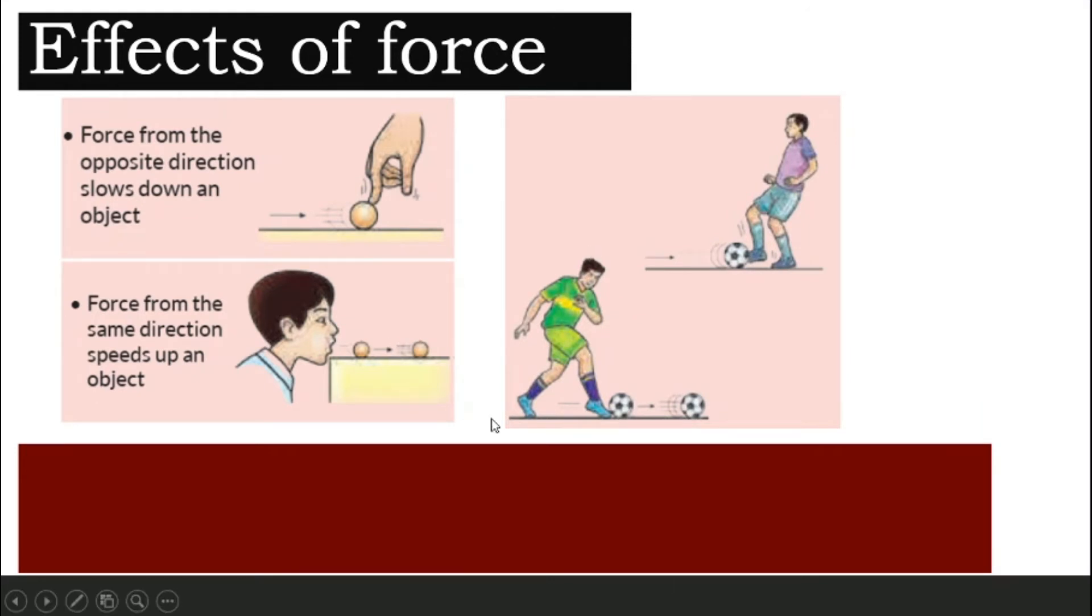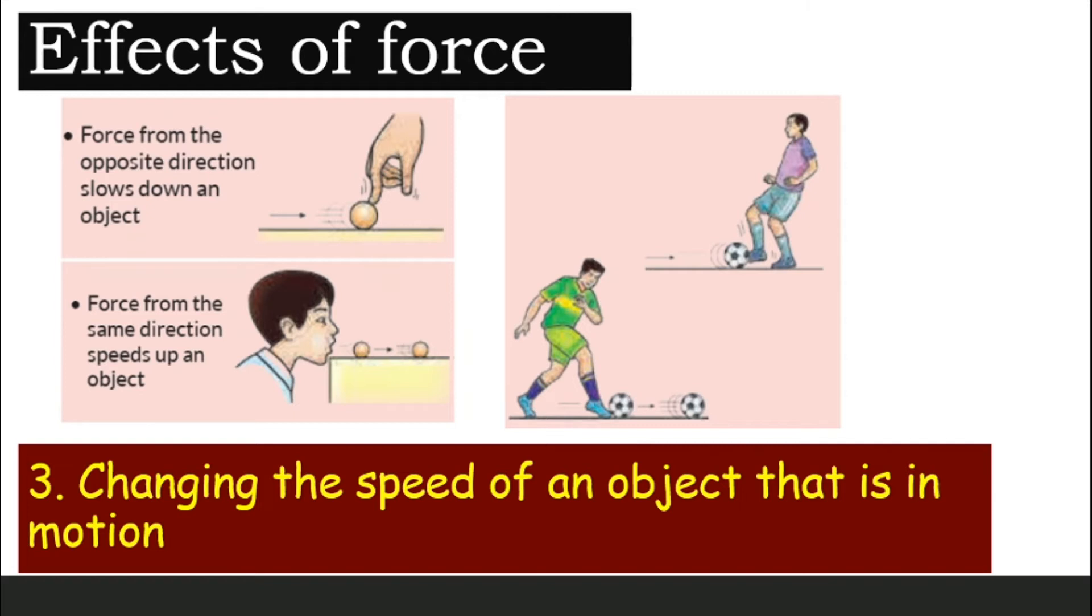Next, let us look at these pictures. What do you think is the effect of force here? The effect of force that is shown in these pictures is that it can change the speed of an object that is in motion. If the ping pong ball or the soccer ball is moving towards the right very quickly, and you apply a force in the opposite direction, not too strong that it stops or change the ball's direction, but enough to slow it down, then the speed has changed. Or, if you apply the force in the same direction as the movement of the object, then the soccer and the ping pong ball will move even faster. So, another effect of force is that it will change the speed of an object that is already in motion.